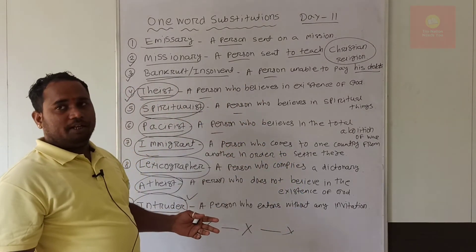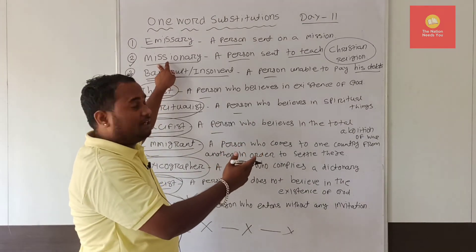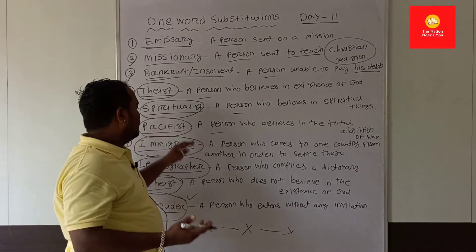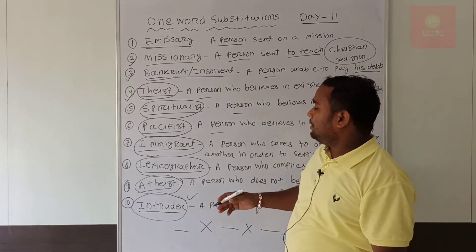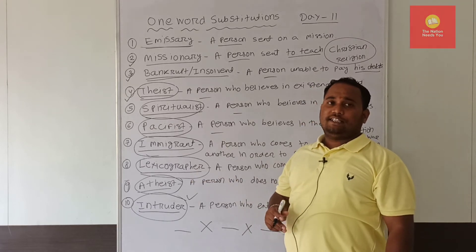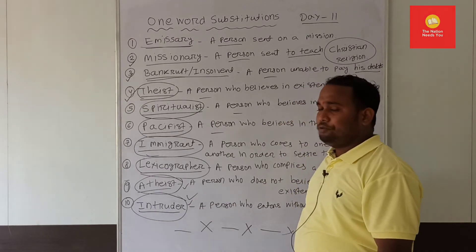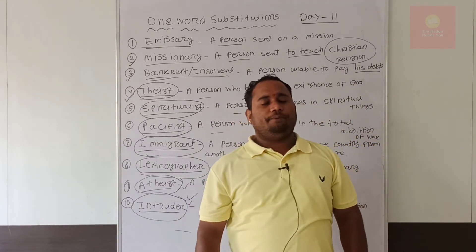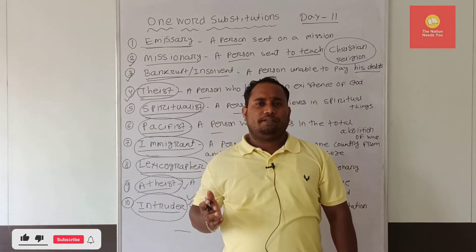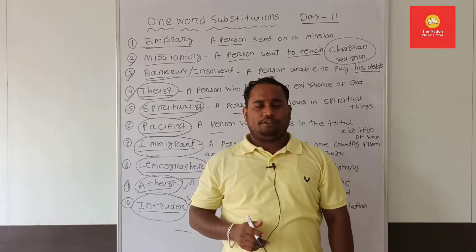So in this class, what we learned: emissary — sent on a mission; missionary — spreading Christian religion; bankrupt — becoming insolvent; theist — trusting in God; spiritualist — believing in spiritual things; pacifist — one who does not believe in war; immigrant — coming to another country to settle; lexicographer — one who compiles a dictionary; atheist — those who don't believe in the existence of God; and intruder — a person who comes without any kind of invitation. In just 5 to 6 minutes we learned 10 words. Now you need some practice — make one sentence for each word. Thank you so much for watching. I will see you in another lesson. Jai Hind!